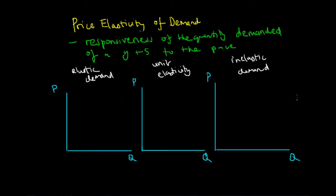Starting off with the elastic demand curve — what it suggests is that a change in price would reflect in a proportionally greater change in quantity demanded. So a small change in price will result in a large change in quantity demanded.